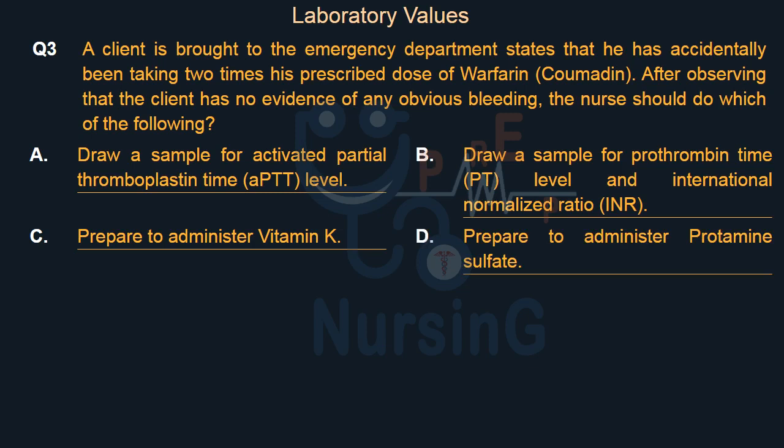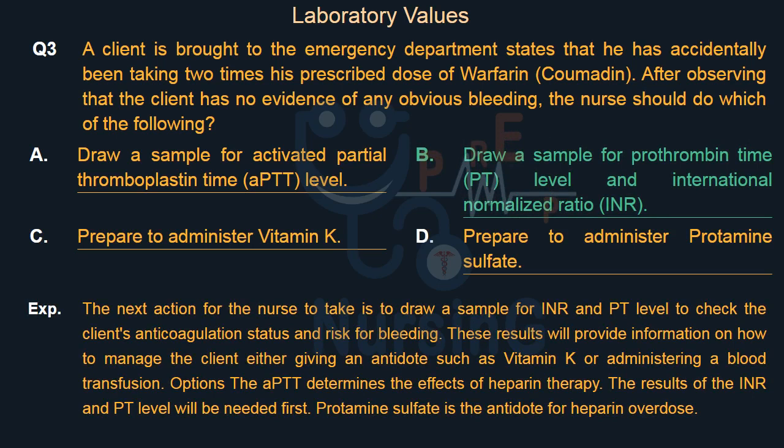The right answer is Option B: Draw a sample for prothrombin time (PT) level and international normalized ratio (INR). The next action for the nurse is to draw a sample for INR and PT level to check the client's anticoagulation status and risk for bleeding. These results will provide information on how to manage the client, either giving an antidote such as vitamin K or administering a blood transfusion. aPTT determines the effects of heparin therapy. Protamine sulfate is the antidote for heparin overdose.